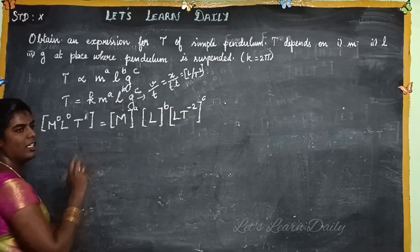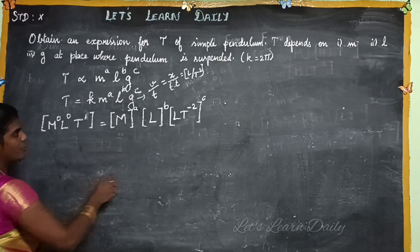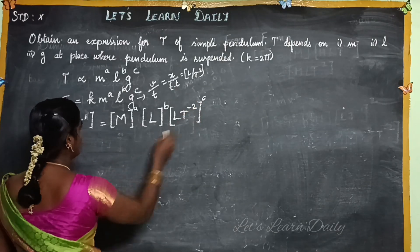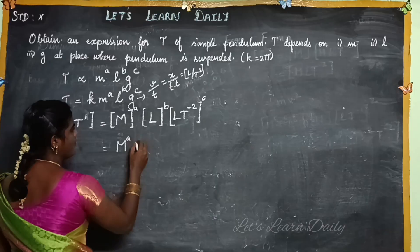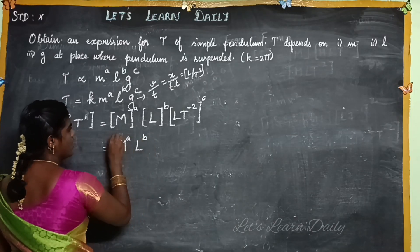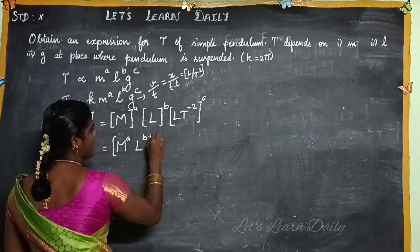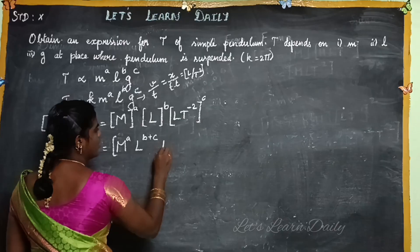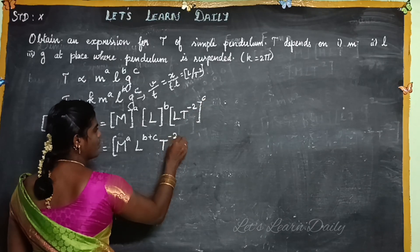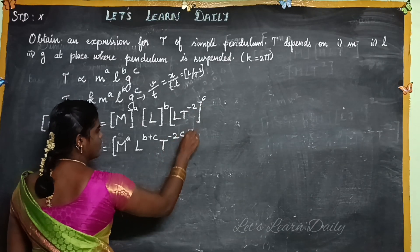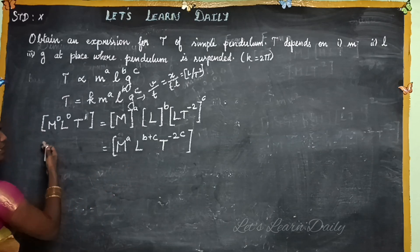Now let's equate the power values. Writing the right-hand side in full: M^a · L^b · (LT⁻²)^c, which gives M^a · L^(b+c) · T^(−2c). This is the right-hand side of the dimensional equation, and on the left side we have M⁰ L⁰ T¹.